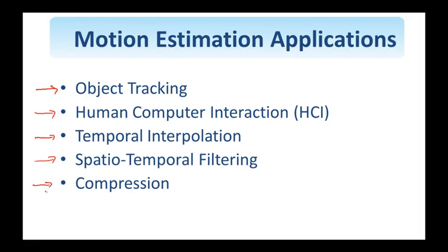We then encode the predictor parameters, the motion, as well as the prediction error or the displaced frame difference. Clearly, we want to perform as accurate motion estimation as possible. This is indeed the case for the first four applications mentioned here.